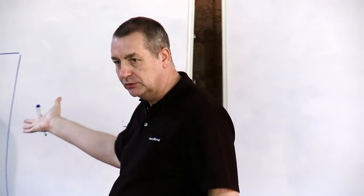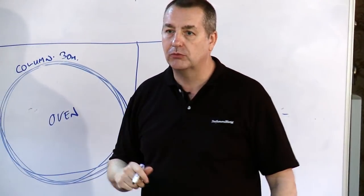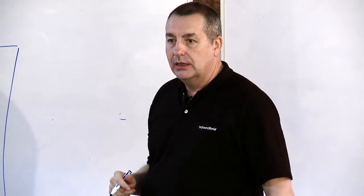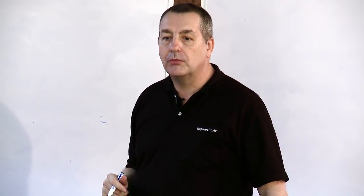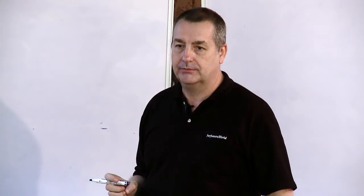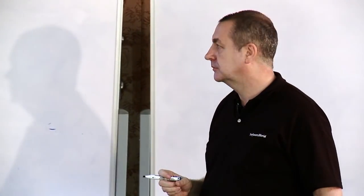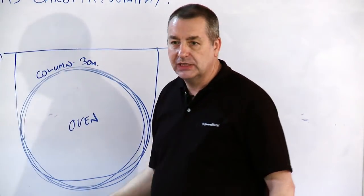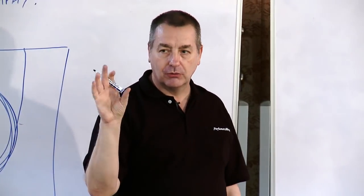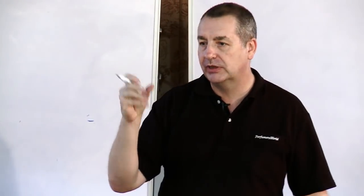This is what's called a non-polar column. There are different types of column depending on what we separate but this is the most common one used for perfumery. So we have an oven which has a really fine control on the temperature. This is really important to it.